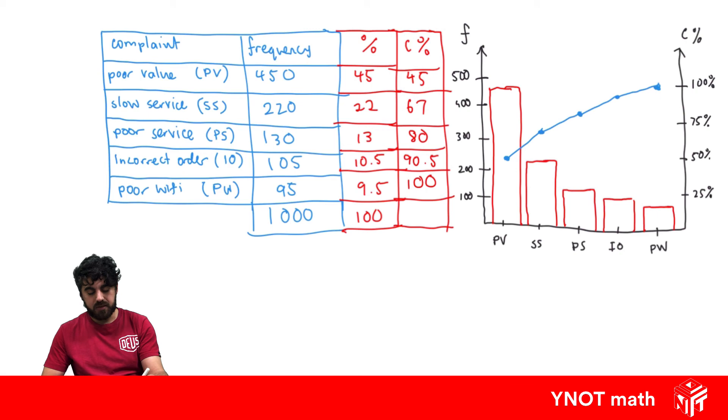You can see the line graph is kind of quite steeper here, so this tells us that a majority of the percentage is taken up here just in the steepness of the graph. So if the fast food company made better value and faster service, they would actually solve 67% of their problems. That would be one way the fast food company could improve their performance after looking at this Pareto chart.